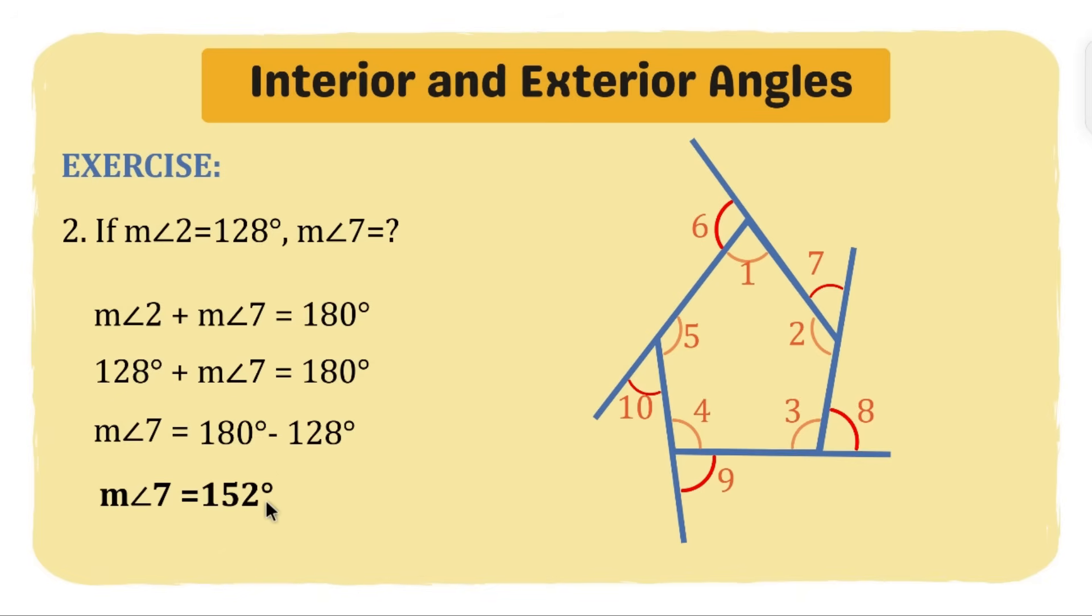In number three, if the measurement of angle 3 is 113 degrees, what will be the measurement of angle 8? Since these are supplementary angles, if you add them together, angle 3 and angle 8, it will be 180 degrees. We know that angle 3 is given, the measurement is 113. Angle 8 is missing, so all we have to do is subtract 113 from 180. The answer is 180 minus 113, which is 67 degrees.